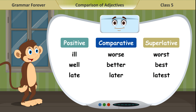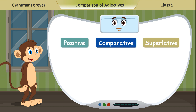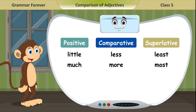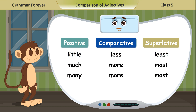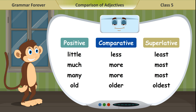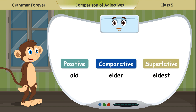More irregular comparisons: Late, later, latest. Late, latter, last. Little, less, least. Much, more, most. Many, more, most. Old, older, oldest. Old, elder, eldest.